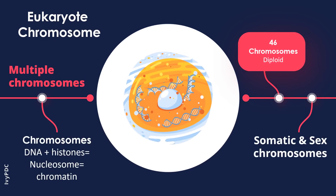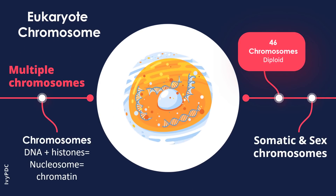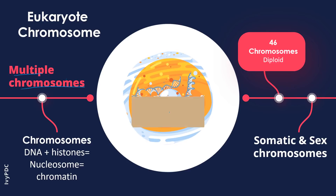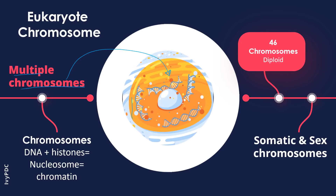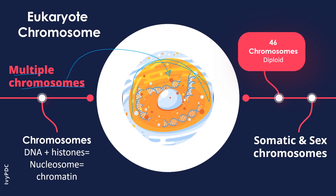Let's now talk about the eukaryotic chromosome. Eukaryotes have multiple chromosomes, and these chromosomes are located inside the nucleus of the cell. The nucleus is also surrounded by a nuclear membrane.